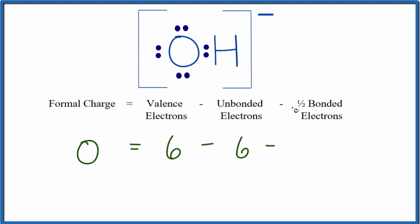And then we'll subtract one-half of the bonded electrons. These are the ones right here between the oxygen and the hydrogen. They form the chemical bonds. So we have one, two of those. Six minus six is zero, minus one is negative one. So the oxygen has a formal charge of negative one, which we'll write like this.